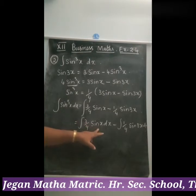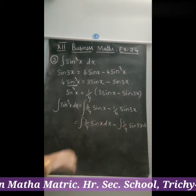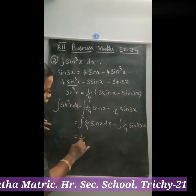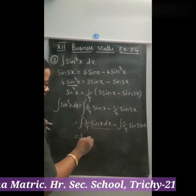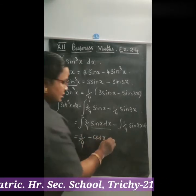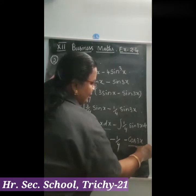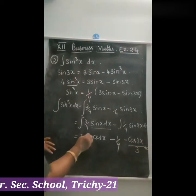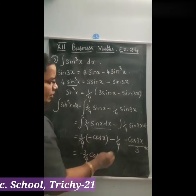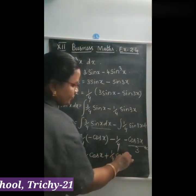So we get: 3/4 into (minus cos x), minus 1/4 into (minus cos 3x divided by 3), plus c. Simplifying: minus 3/4 cos x plus (1/4)(cos 3x / 3) plus c. Since 4 times 3 equals 12, this becomes minus 3/4 cos x plus 1/12 cos 3x plus c.